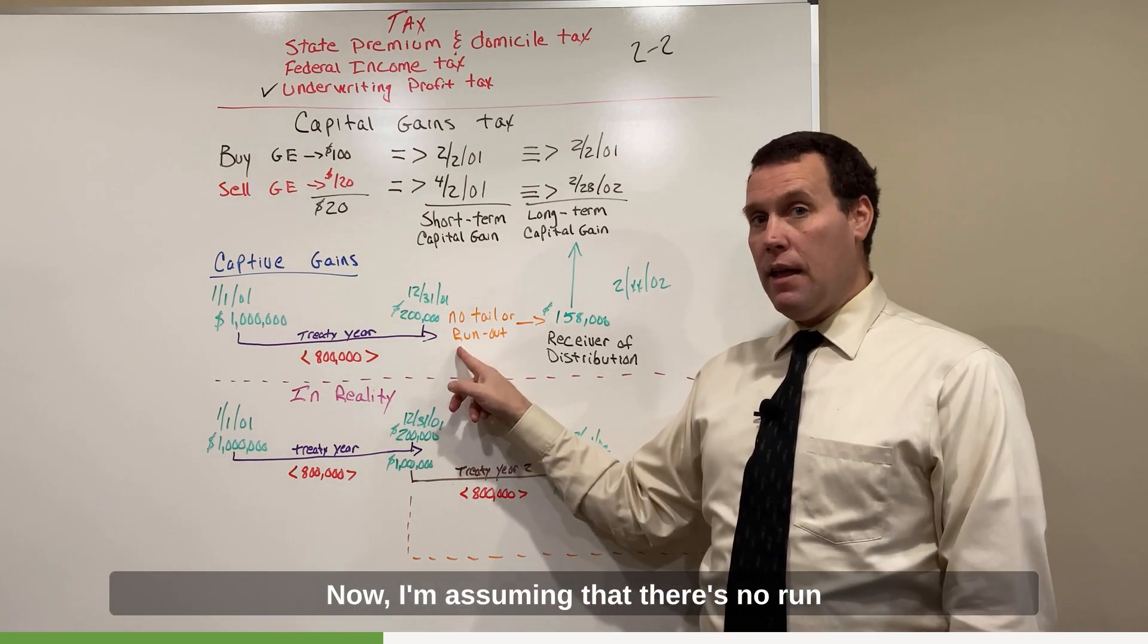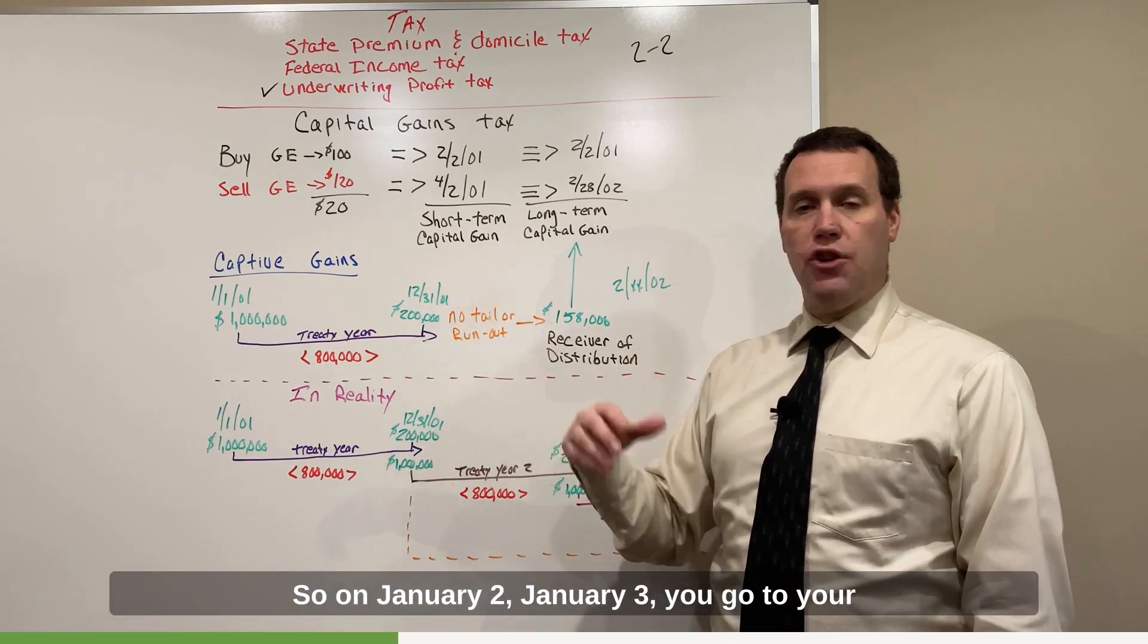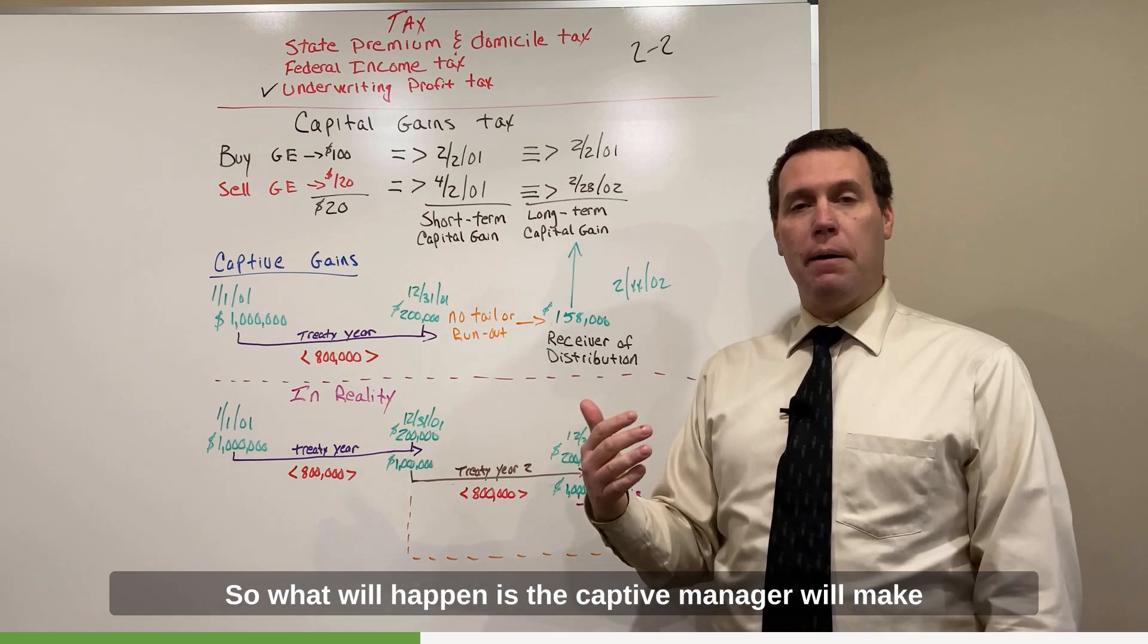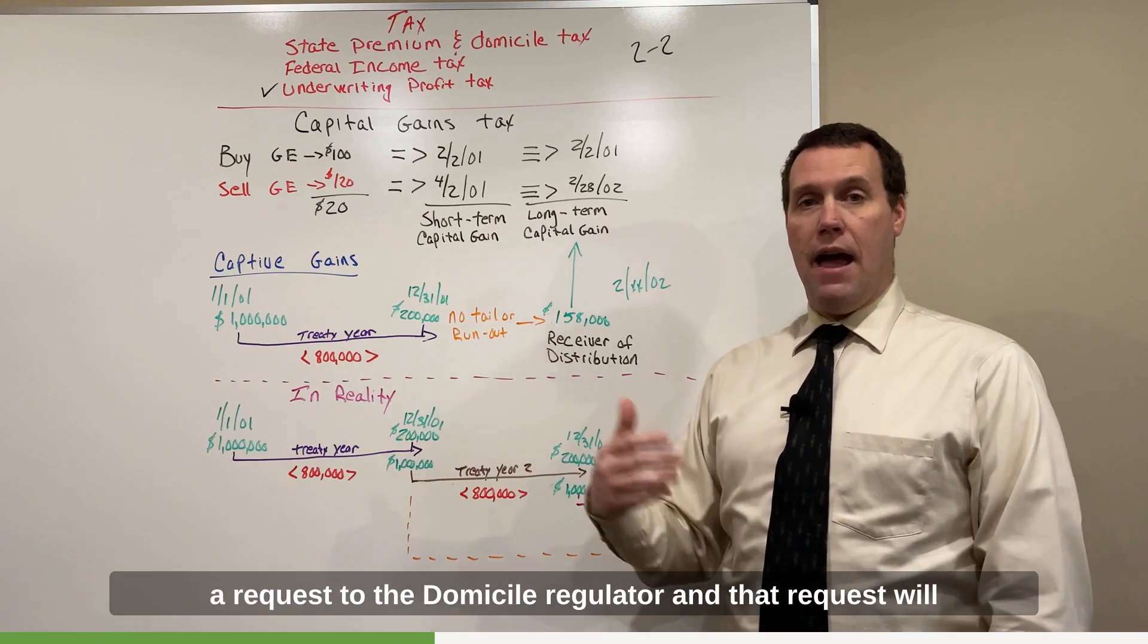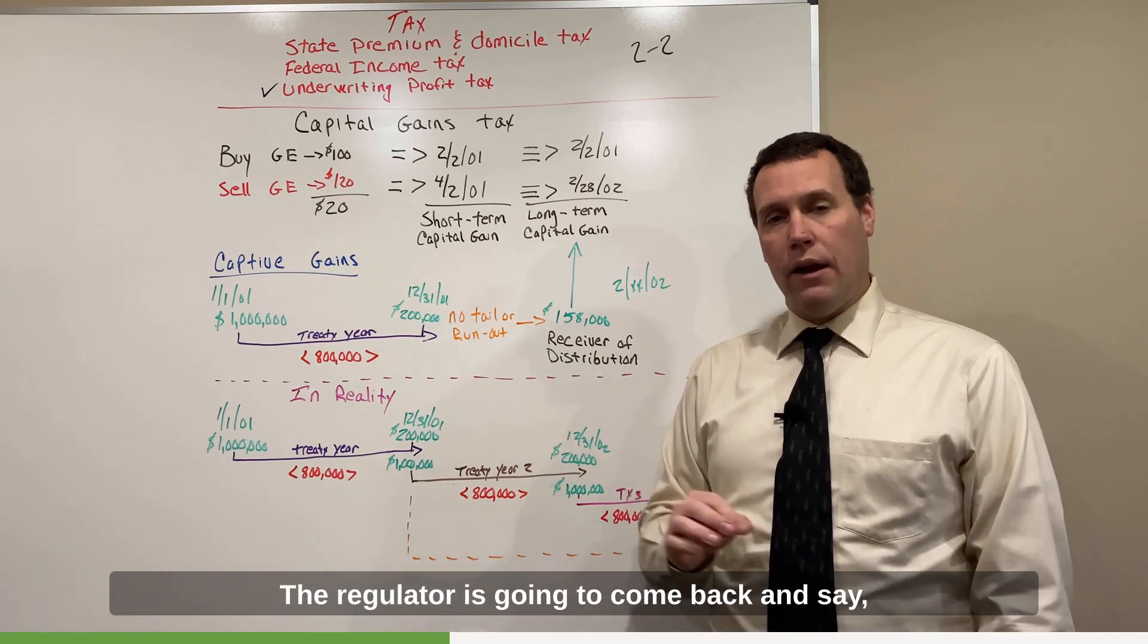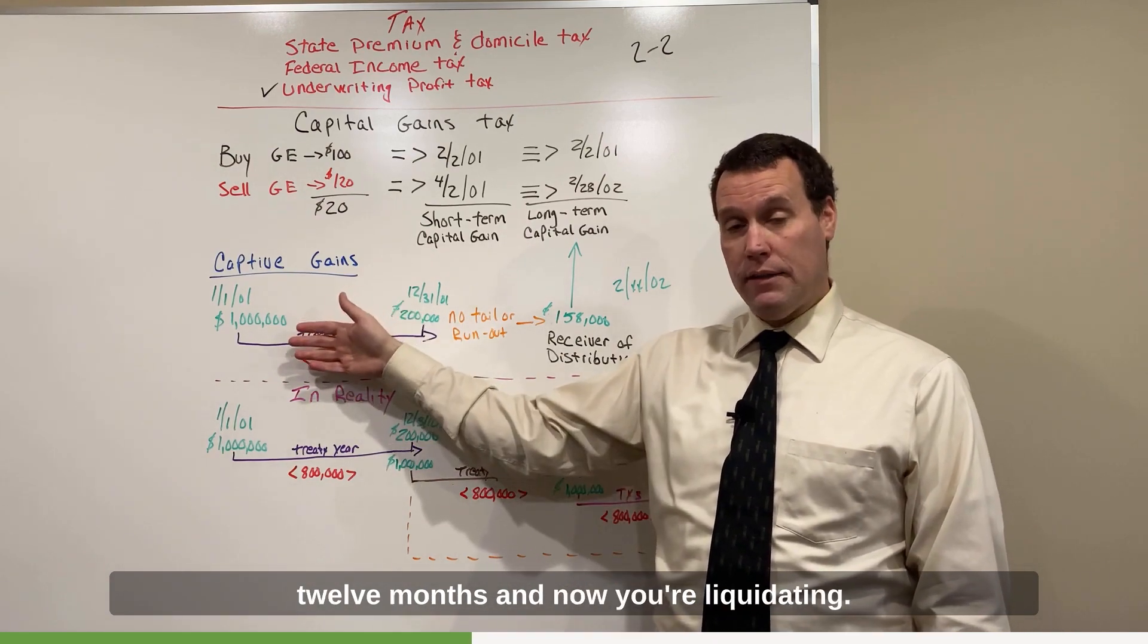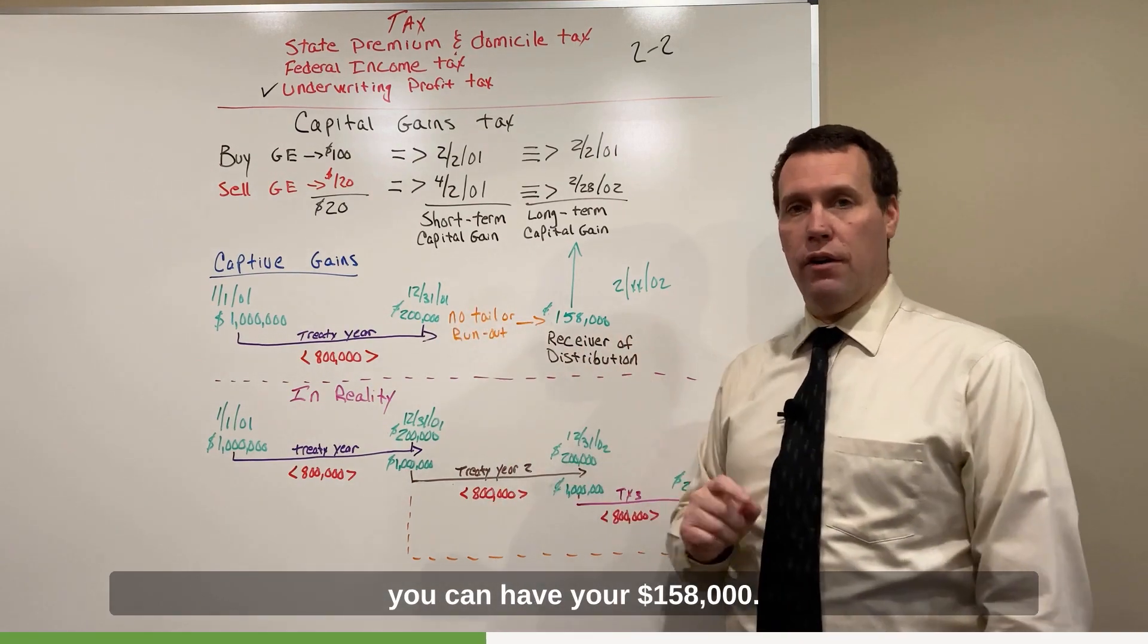Now I'm assuming that there's no run-out or tail with this policy. So on January 2nd, January 3rd, you go to your captive manager and you say, hey, I want my $158,000. So the captive manager will make a request to the domicile regulator. And that request will say something like, hey, the client wants the $158,000. The regulator is going to come back and say, now wait a minute, what's the mission of this captive? Was the original desire to have it for 12 months and now you're liquidating? Because if that's the case, okay, you can have your $158,000.